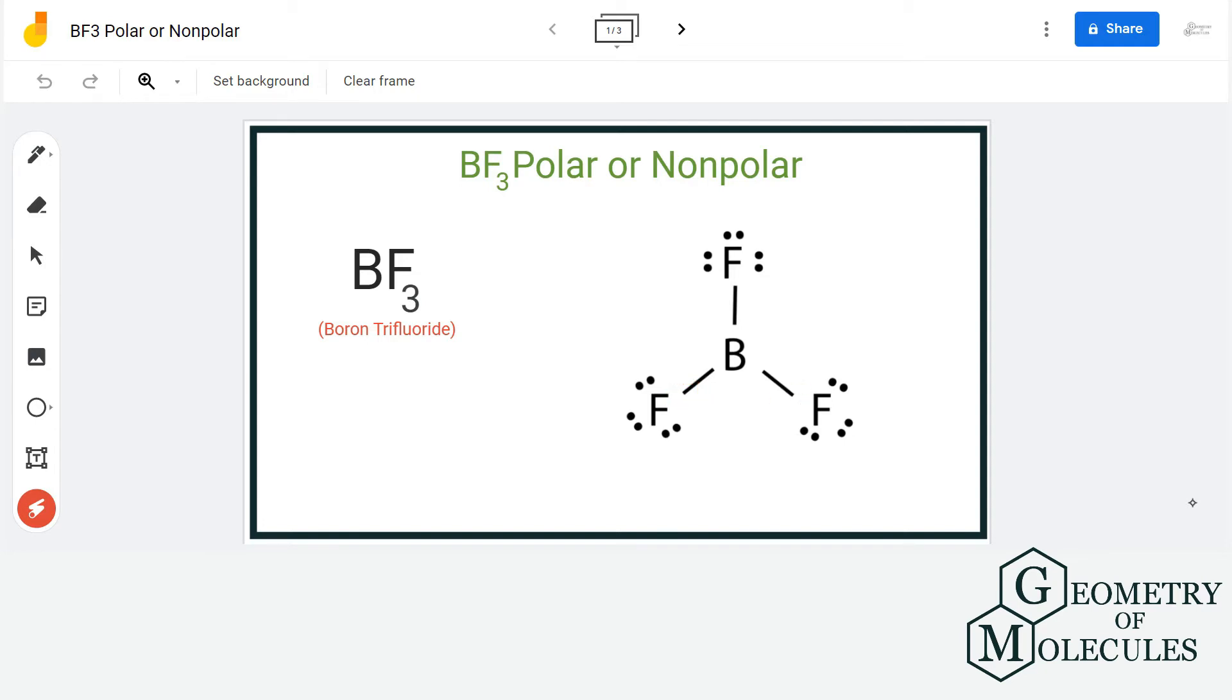So to determine those forces, we will look at its structure or rather shape. Here we can see that the fluorine atoms are spread out evenly. So even if there is a dipole moment, all the dipole moments will get cancelled out because of the symmetry. Here we can see that the fluorine atoms are spread evenly in the plane. So because they are spread evenly, the chances of repulsive forces are quite less.